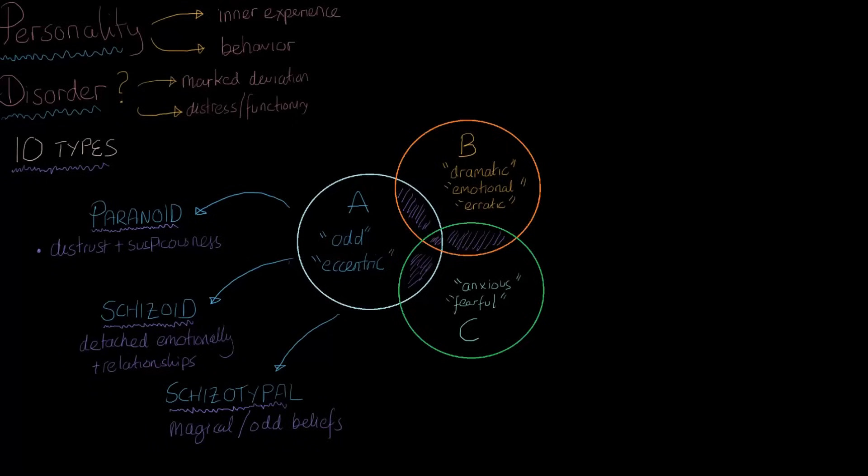Let's move on to cluster B. This is a cluster that has four of the personality disorders, including antisocial, borderline, histrionic, and narcissistic. As I mentioned, cluster B often contains dramatic, emotional, or erratic traits.